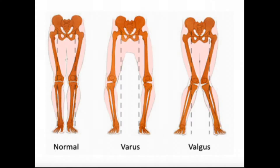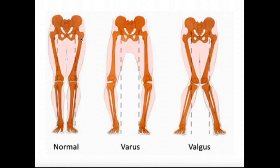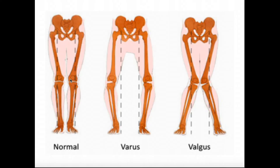Looking at this slide, on the left we're looking at a normal knee angle. What's interesting is that the femur actually naturally runs medially at a diagonal angle. So this is actually a normal knee angle.